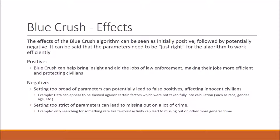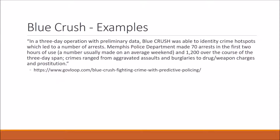The effects of Blue Crush are both positive and negative. The positive is that Blue Crush will help police departments find criminals and prevent future crimes. The negative is that if you set the parameters too broad, you'll affect innocent civilians, and if set too strict, you'll miss out on other crimes. An example in real life is the Memphis Police Department. In their preliminary use of the algorithm, they made 70 arrests in the first two hours, a number typically made over an entire weekend, and over three days they made 1,200 arrests.